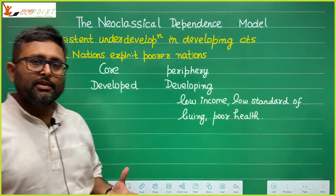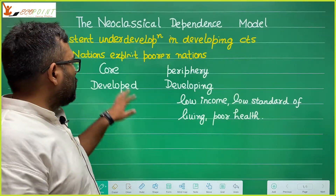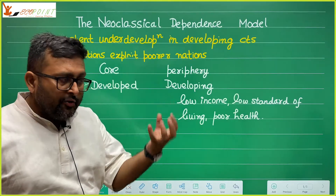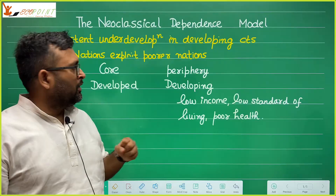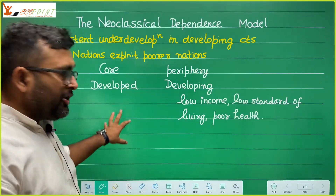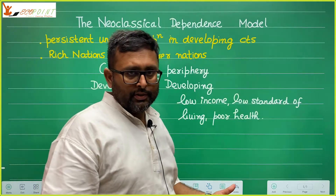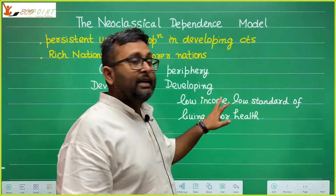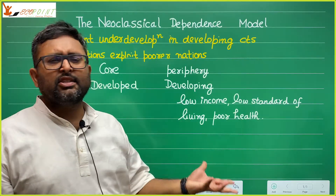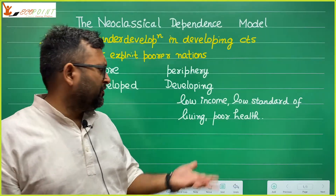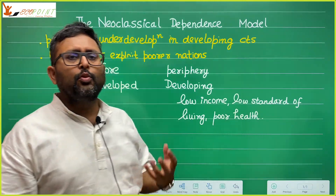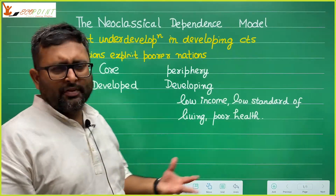There are two kinds of countries. One is core countries and another is periphery countries. Core countries are at the center, while periphery countries are on the boundaries. Core countries are developed countries, and periphery countries are developing countries. These developing countries have the natural characteristics of underdevelopment — for example, low income, low standard of living, and poor health.